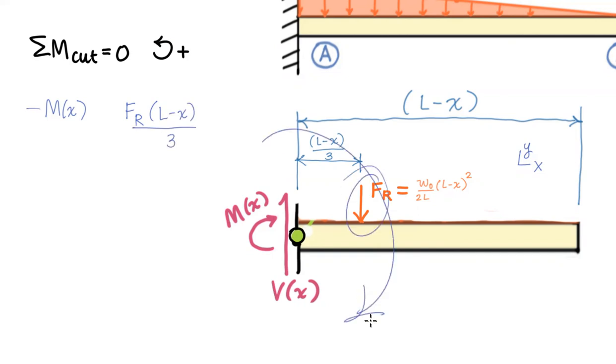That force tends to rotate the body clockwise about that green dot and that one we call a negative. Set all that equal to zero. I'm going to do a little bit of algebra.